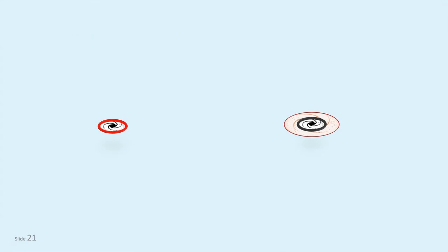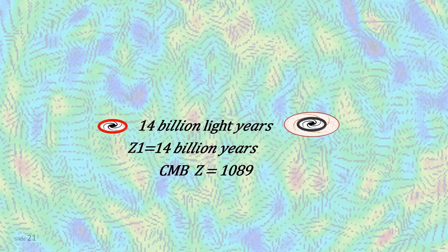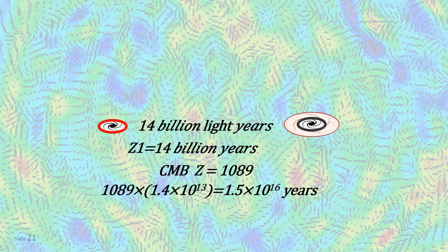When we calculate the distance of the galaxy at Z1, we get a distance of 14 billion years, and that's the same number we got for the age of the universe. But in this model, that's not surprising, with no actual comoving change in position. The light year distance and how long ago the light left are equivalent. So, if Z1 is 14 billion years, then the oldest light, the cosmic microwave background, is nearly 1100 times older and further.